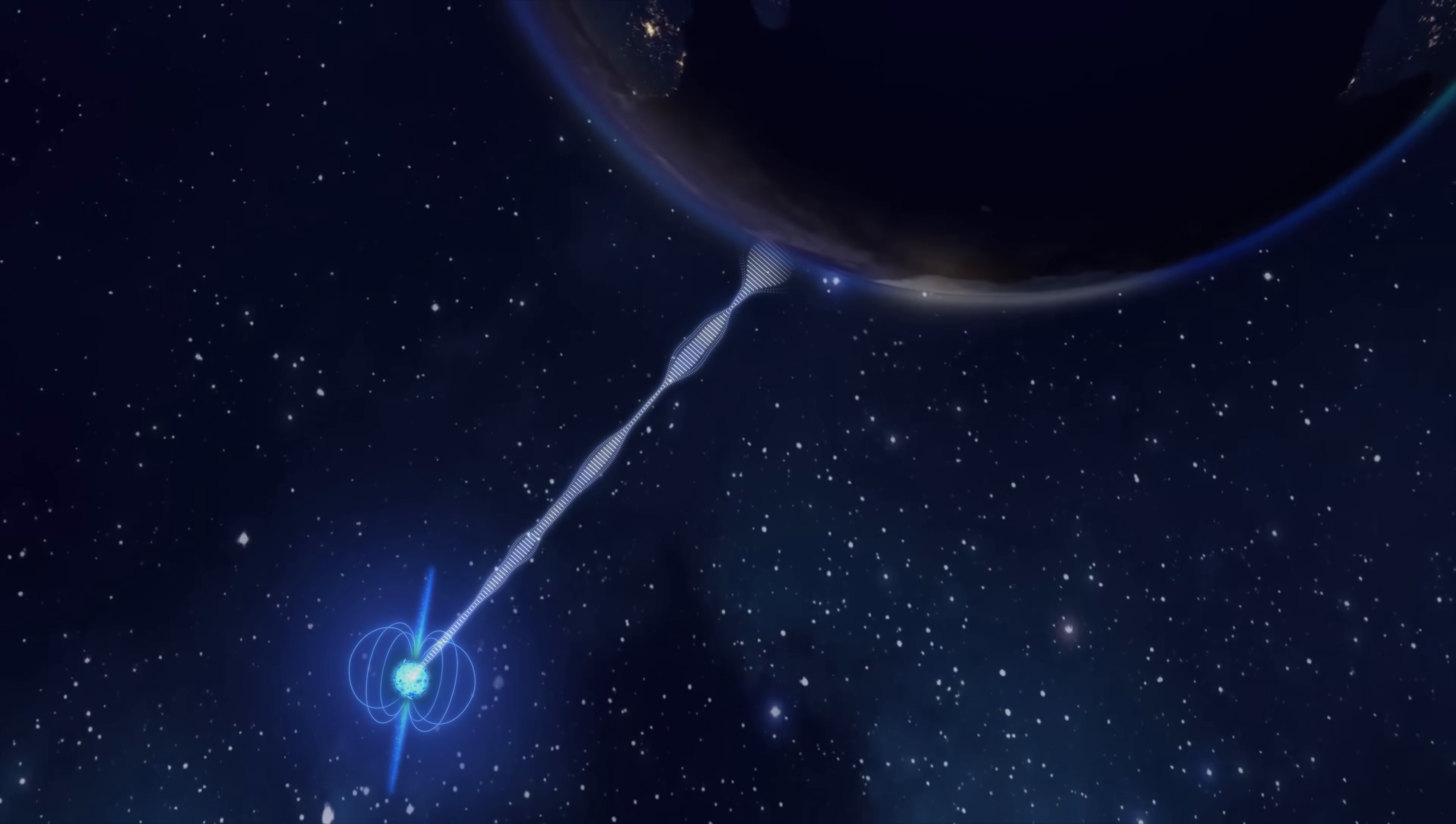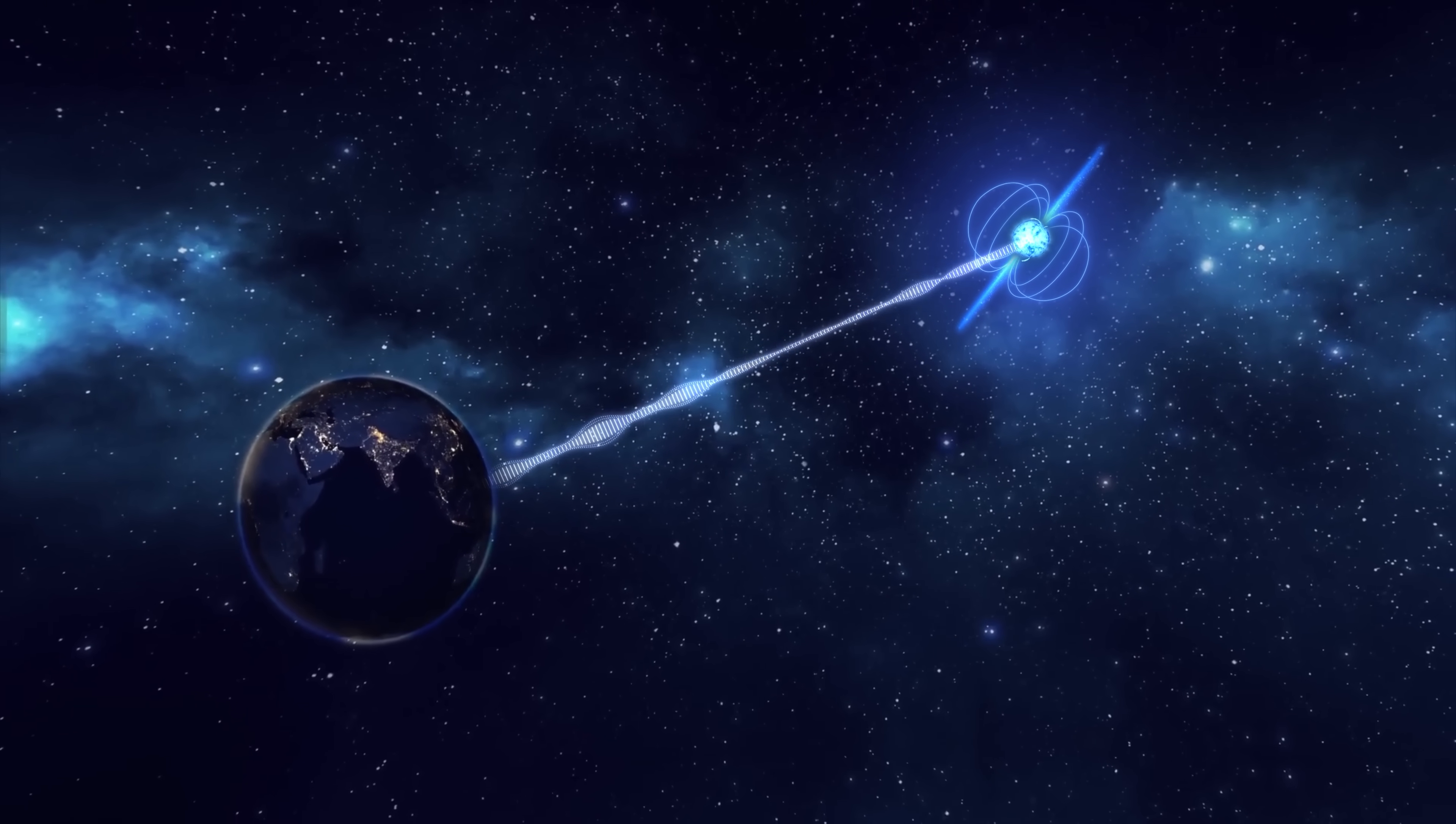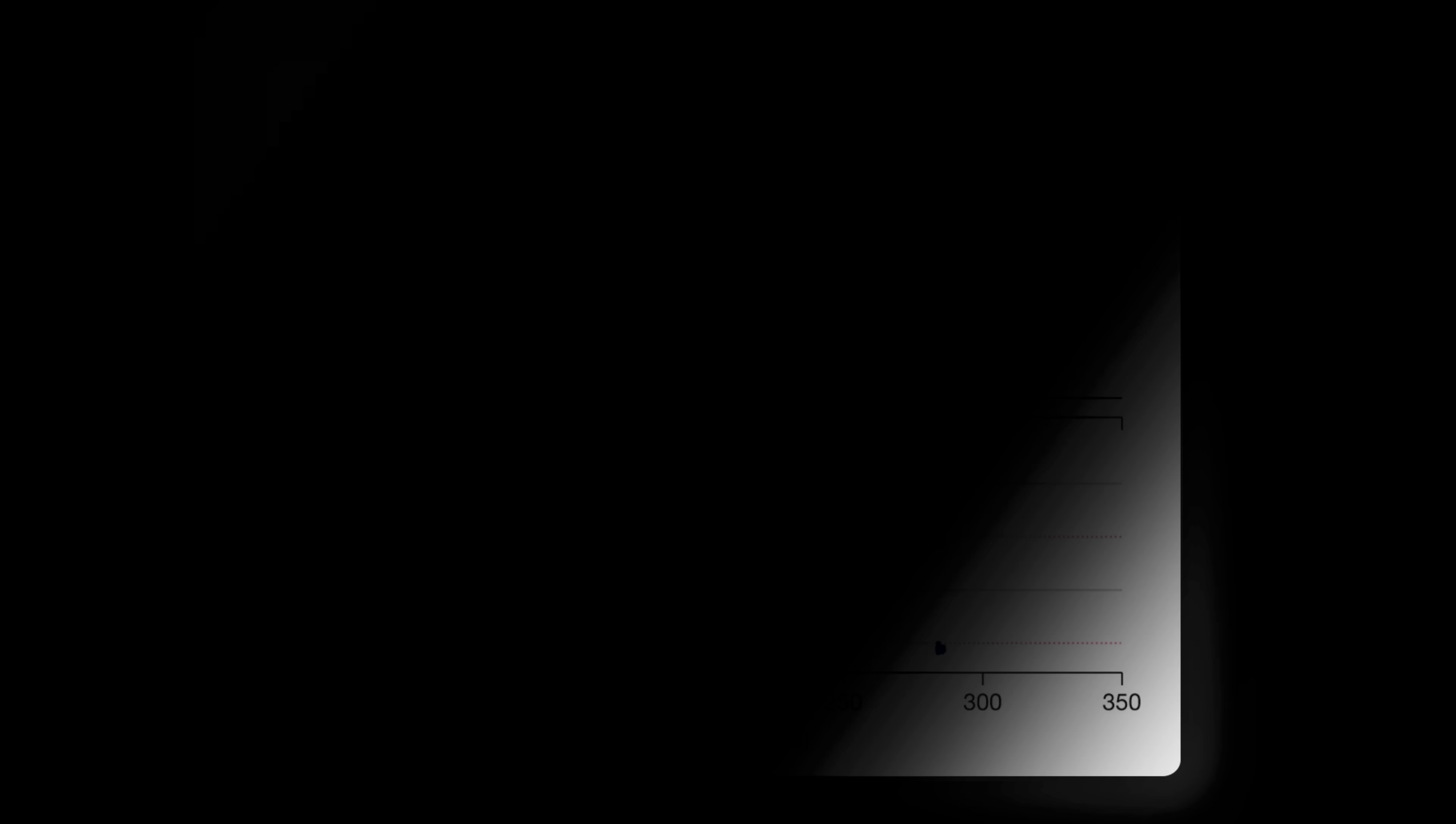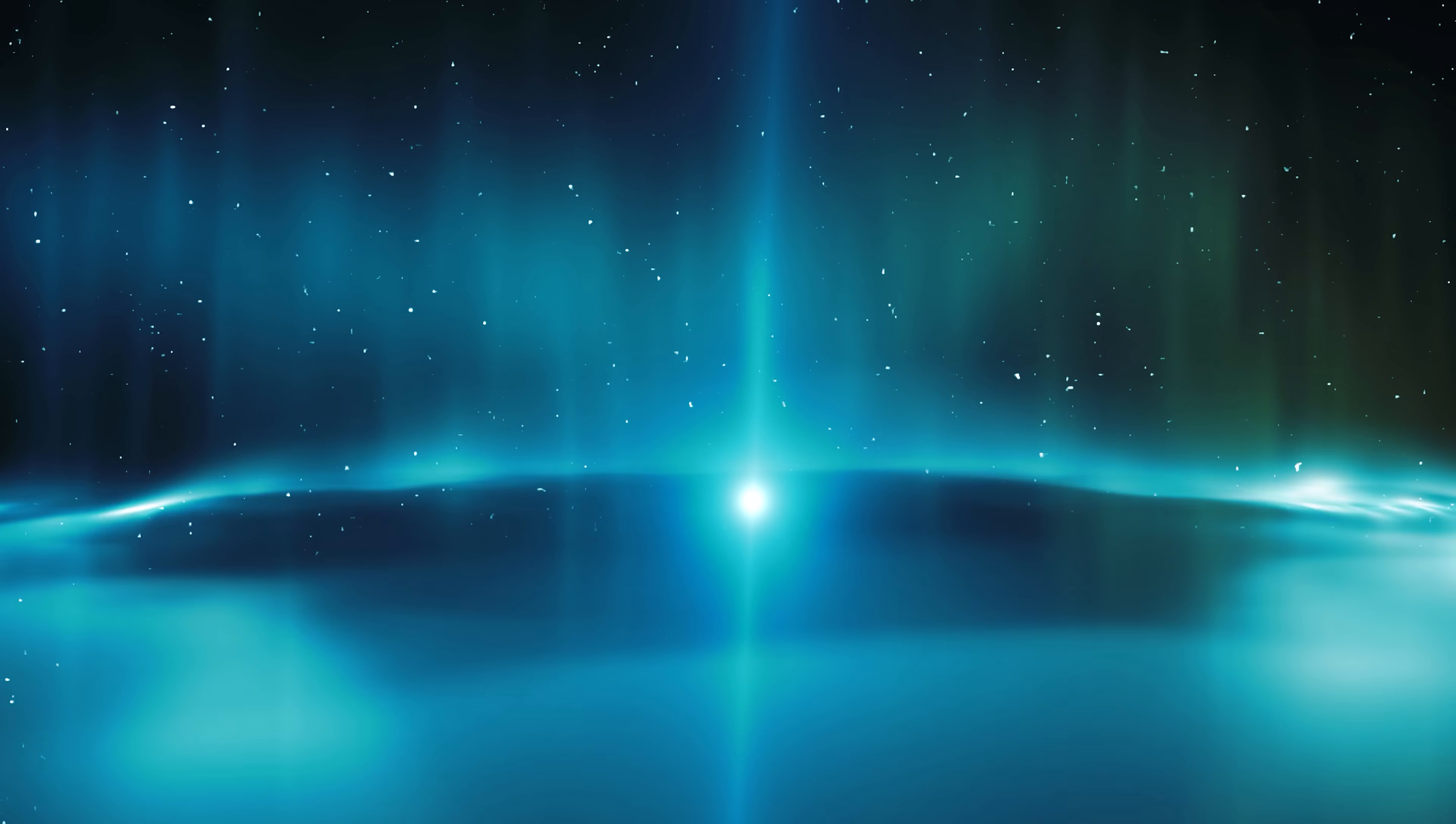So, unlike time signals that come and go, GPM J1839-10 arrives continuously every 22 minutes without fail. Its rhythmic pattern is unlike anything we've encountered in the field of radio astronomy. For 35 years, it's maintained this cycle, challenging our understanding of cosmic phenomena.